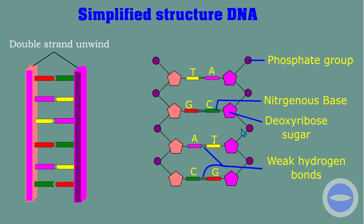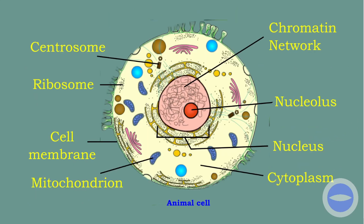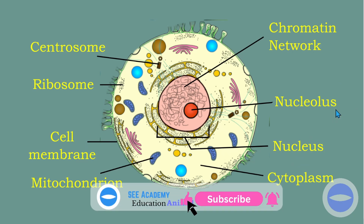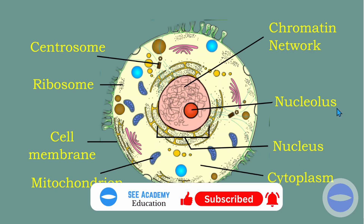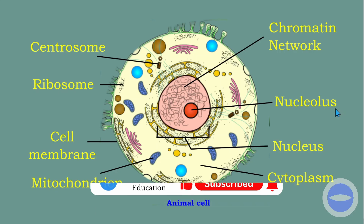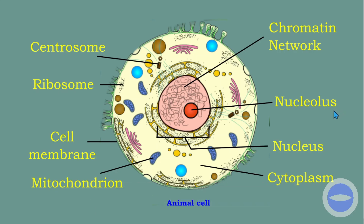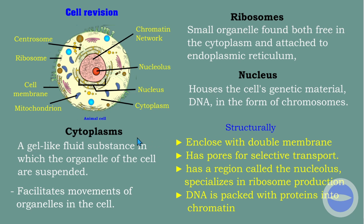Before we start with the topic of today, I would like us to go back and do some revision about the structures of a cell. The structure that you see on your screen is an animal cell. In grade 10, we did the plant cell and the animal cell, but in grade 12, we will focus only on certain parts of a cell: cytoplasm, ribosomes, and the nucleus.